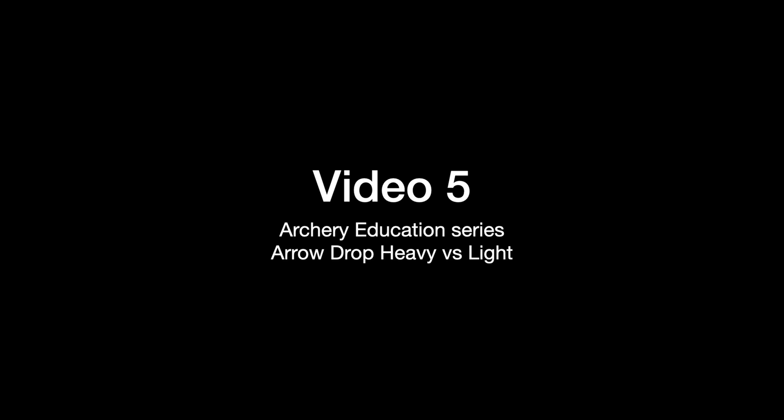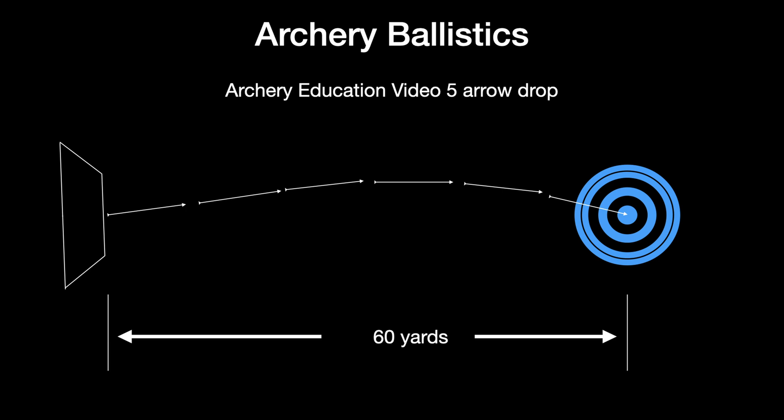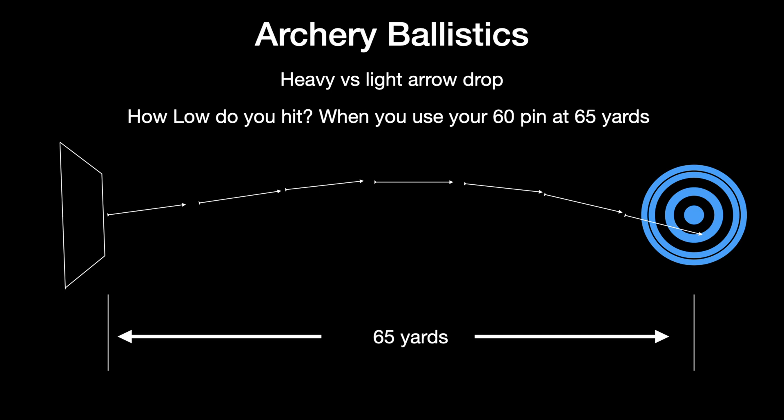This is video 5 of the Archery Education Series. Today we're going to talk about trajectory of an arrow, and specifically we're going to look at it from a point of misjudging a yardage and how much difference we have in arrow drop.